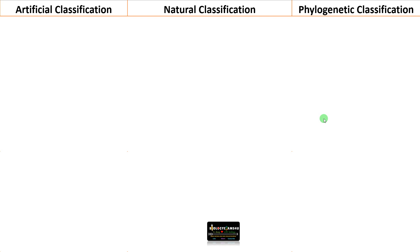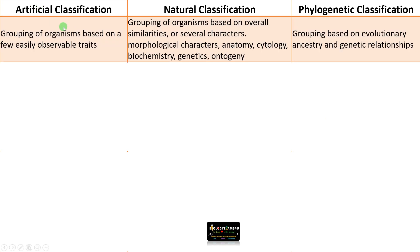Now let us sum up the differences. Artificial classification is grouping of organisms based on few easily observable traits. Natural classification is based on overall similarities, where several characters are considered — morphological characters, anatomy, cytology, genetics, etc. Phylogenetic classification groups organisms based on evolutionary ancestry and genetic relationships, primarily focusing on molecular data.